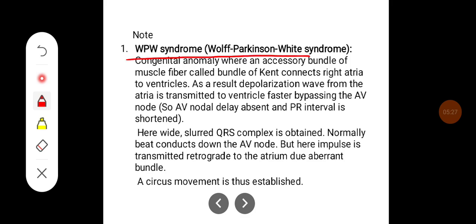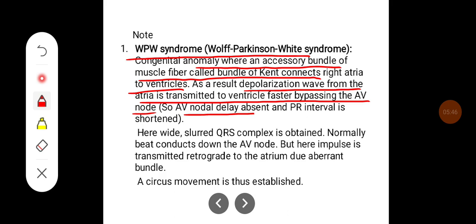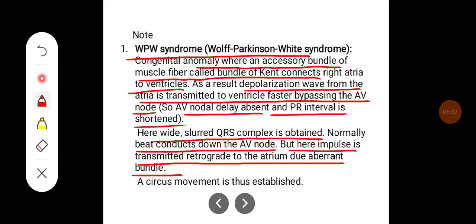WPW syndrome, that is Wolff-Parkinson-White syndrome: a congenital abnormality where an accessory bundle of muscle fiber called bundle of Kent connects right atria to the ventricles. As a result, depolarization wave from the atria is transmitted to ventricle faster bypassing the AV node. So AV nodal delay is absent and PR interval is shortened. Here wide slurred QRS complex is obtained. Normally beat conducts down the AV node, but here impulse is transmitted retrograde to the atrium due to the aberrant bundle. The circus movement is thus established.